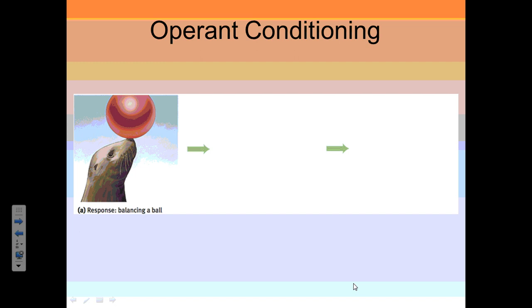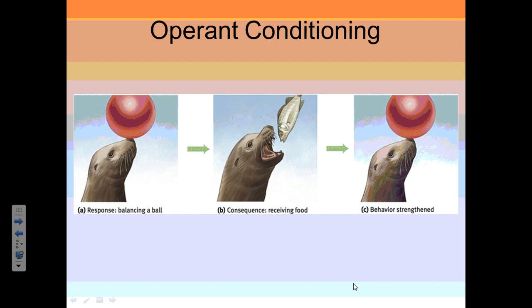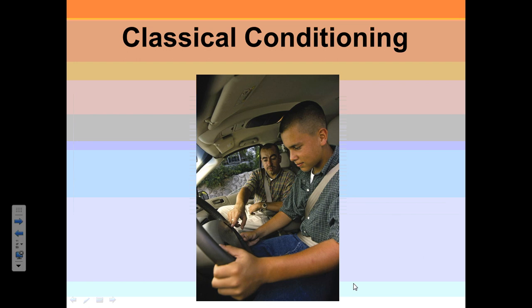We're also going to talk about operant conditioning today. Operant conditioning is very simple — learning from consequences. If you do something good and get rewarded, you're more likely to repeat that behavior. If you do something and get punished, you're less likely to repeat it. But let's focus on classical conditioning first.